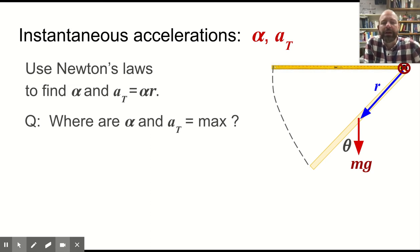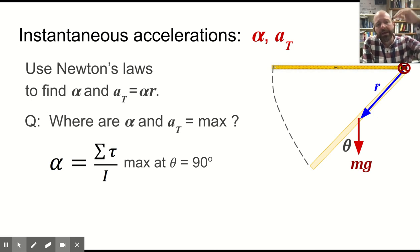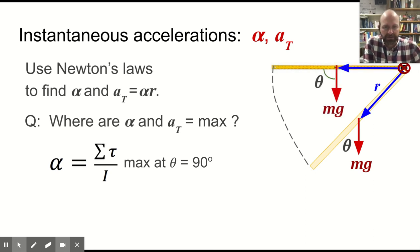And we might ask the question, where are these two maximum? You talked about this in class, and we came to the conclusion that since alpha is net torque over I, it's going to be maximum when the force of gravity is straight down and the R is to the right or left, so when they're perpendicular. So this will happen at the top.